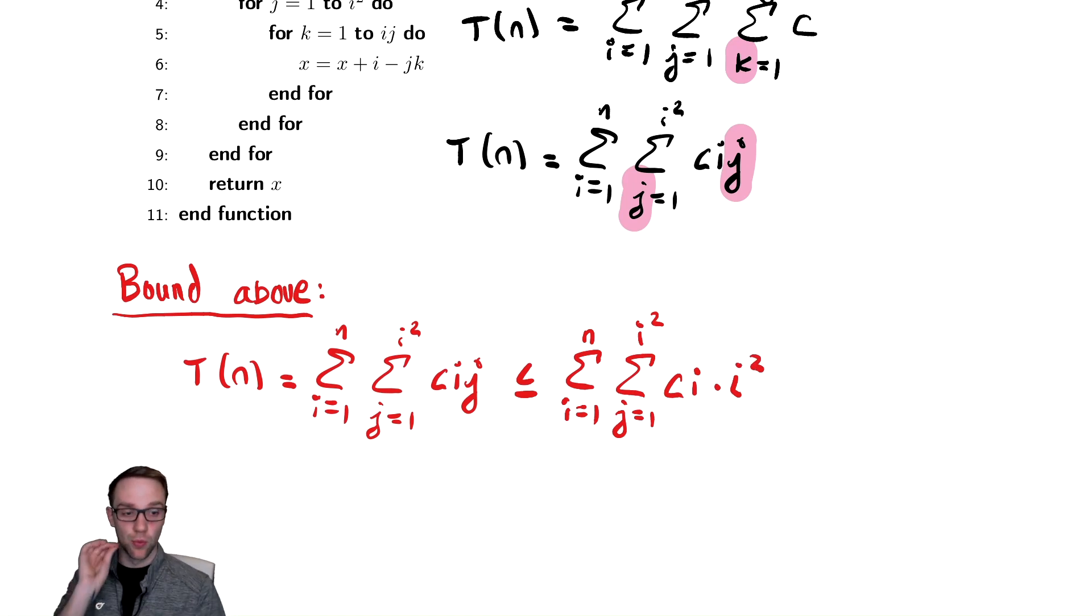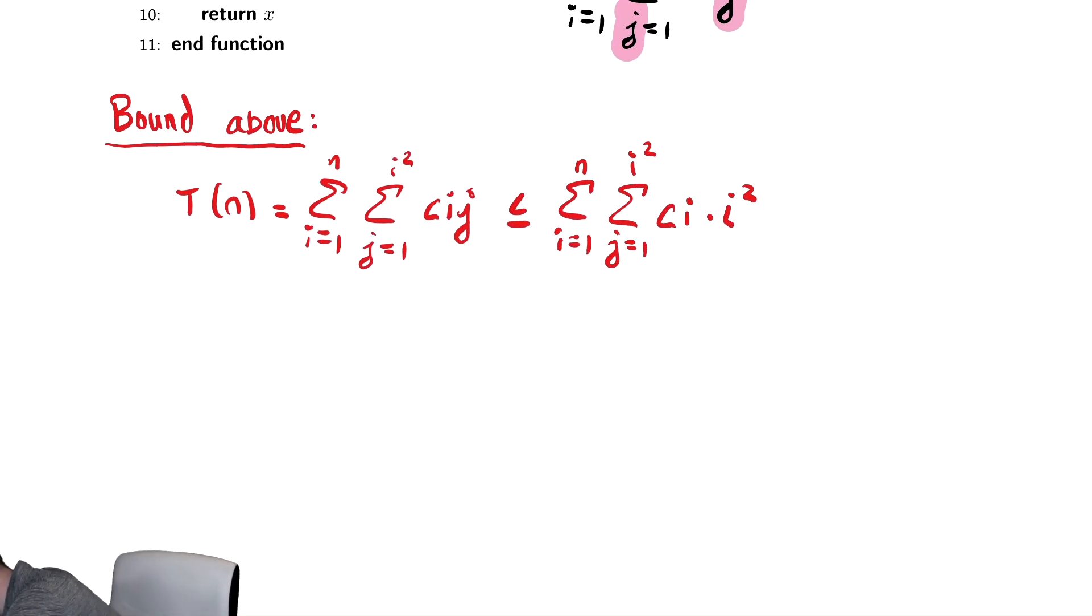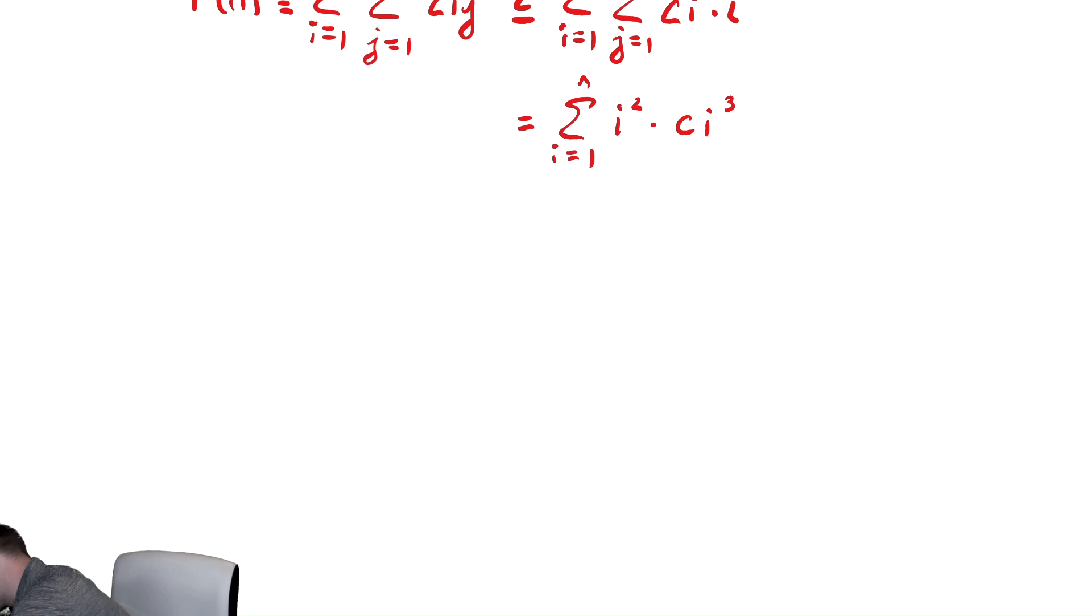So this is ci times i squared. And now, the reason that this is helpful is j is now no longer in the summation. For all intents and purposes, ci times i squared is a fixed quantity. So we can now take the sum and ci times i squared and multiply by the number of terms in the summation. So this is equal to the sum from i equals 1 to n of the number of terms, which is i squared, times the sumand, which I can simplify and write as ci cubed. Just from random sanity, let's collect together some like terms. That's the sum from 1 to n of ci to the fifth.